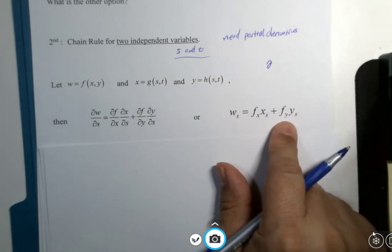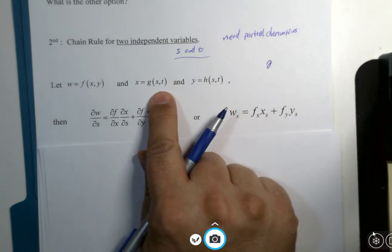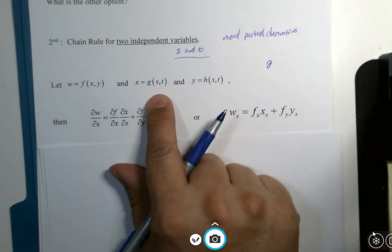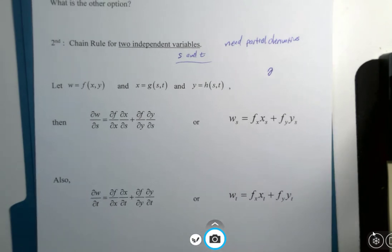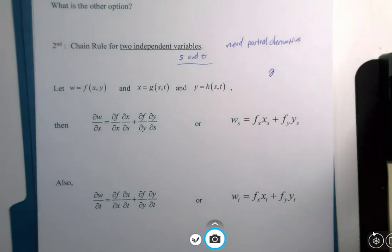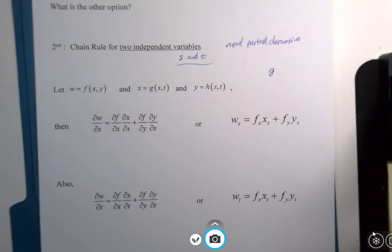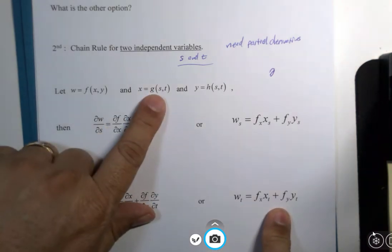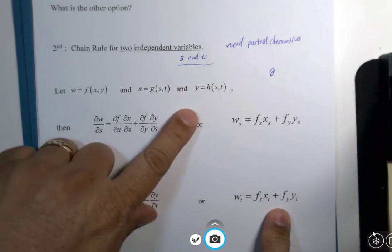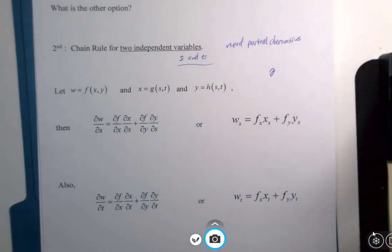Very similar to some things we've been seeing. And then if you wanted to go after the t variable, it would be very similar. Partial with respect to t, there are your x and y partial derivatives. And then you take the t partial derivative for both x and y.